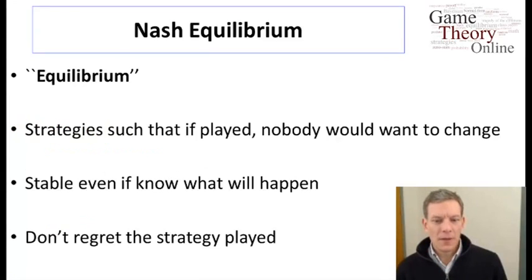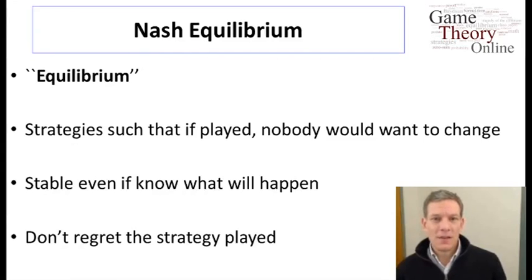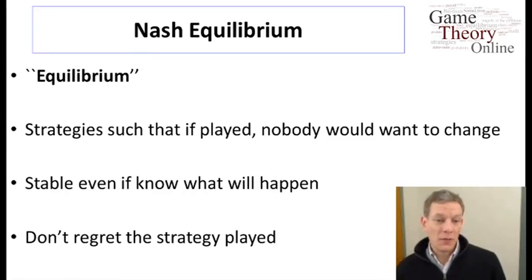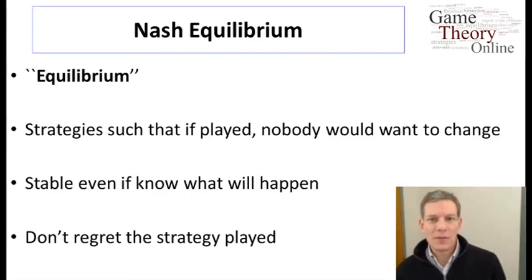The main concept used in game theory in terms of equilibrium is known as Nash Equilibrium. The idea behind the concept is basically that it's a set of strategies or actions by the players, such that if each player correctly predicted what other players were going to do, then they would not want to change their actions. They're choosing the best possible action in response to what the other players are doing. It's very stable — if we reach a point like that, nobody wants to change, nobody regrets the strategy they played. They couldn't have done better.